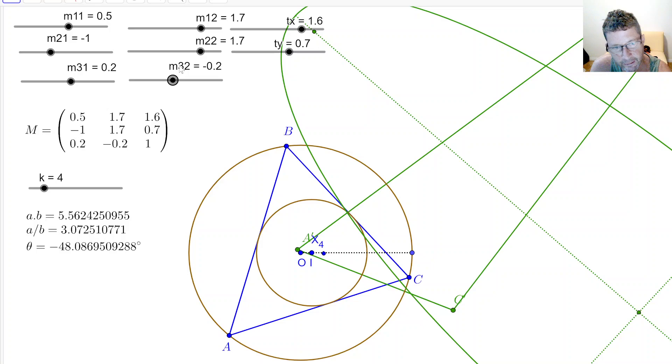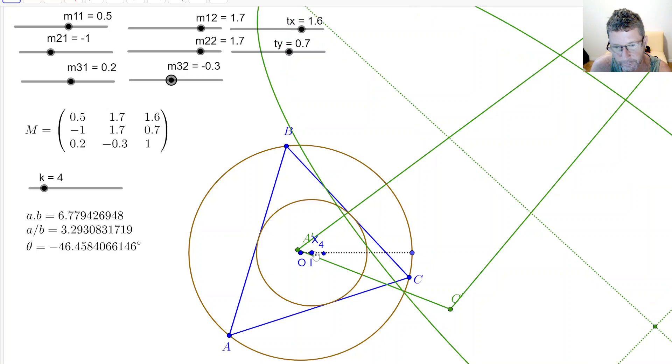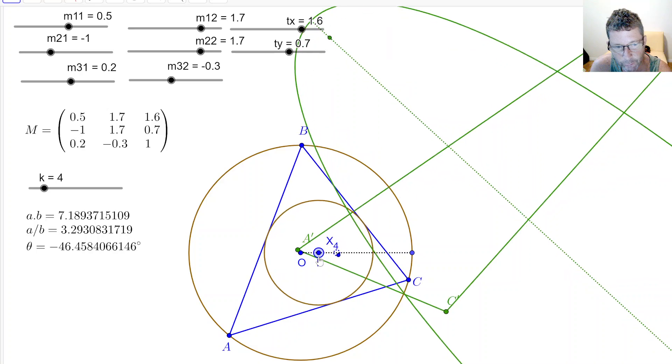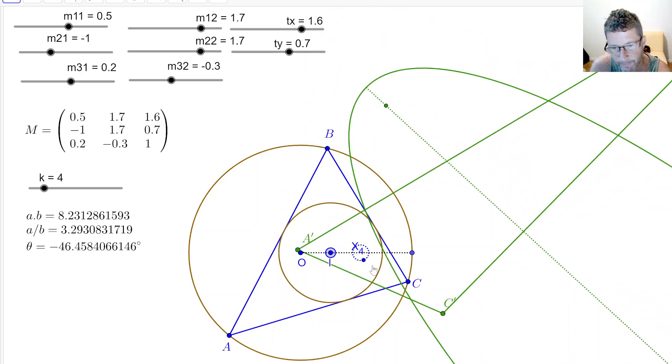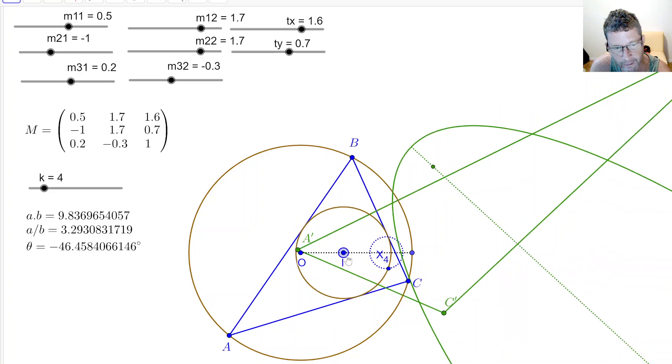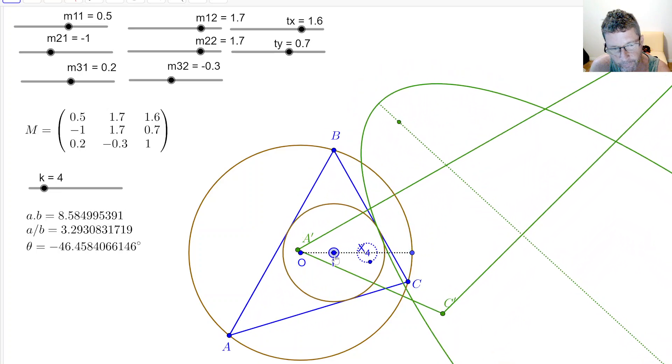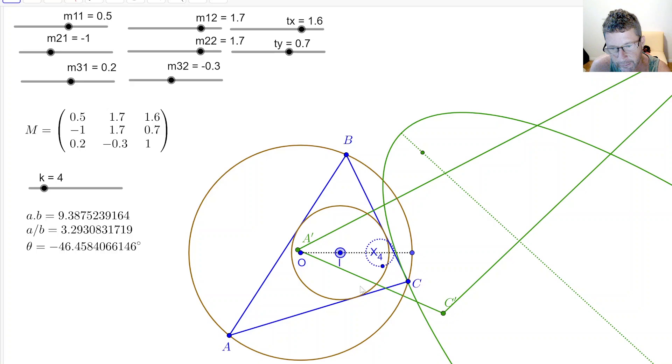And then if I activate the full-on projectivity, it continues to conserve both. You can see here that theta is jumping 180 degrees. This is just a numeric issue, but it's conserving both ratio and orientation.